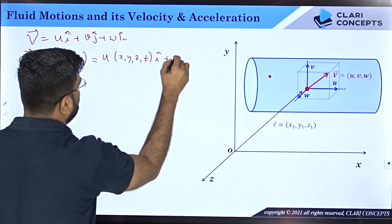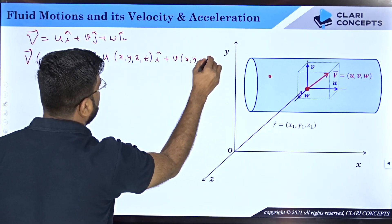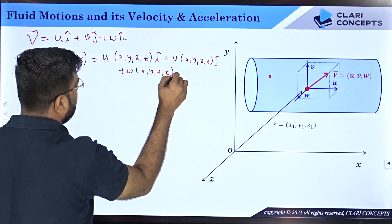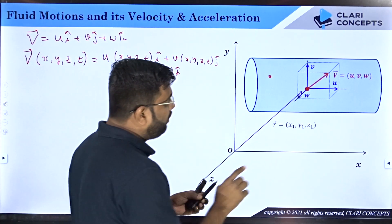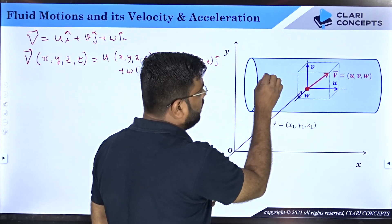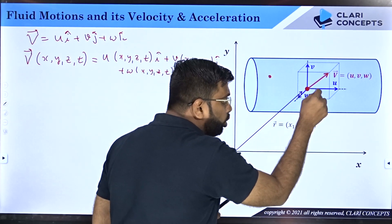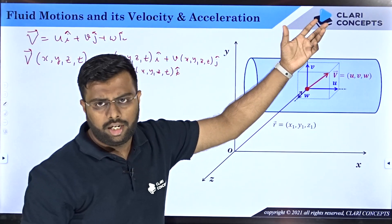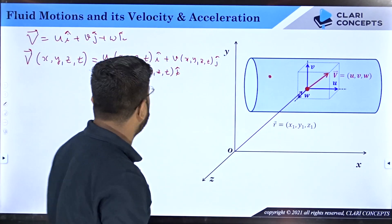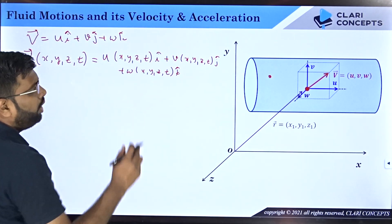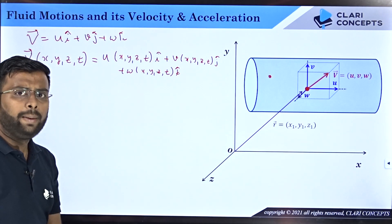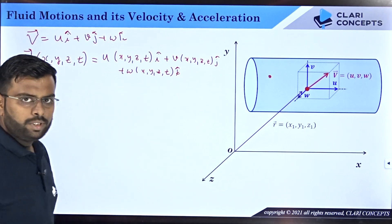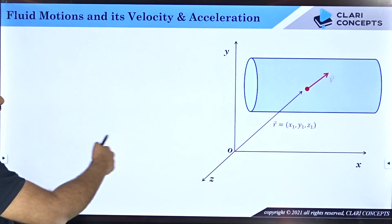So we represent velocity as V = u(x,y,z,t)·i + v(x,y,z,t)·j + w(x,y,z,t)·k. Each individual component u, v, w will be different at different spatial points and also different at the same point with respect to time. In general, u, v, and w are functions of the space coordinates x, y, z and also time t.